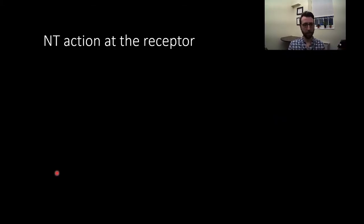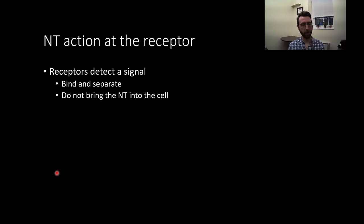We're talking about receptors mostly for neurotransmitters here. What receptors do is they basically detect the presence of a signal. Neurotransmitters bind to a receptor and then separate. It's worth noting, and this may sound obvious, that the receptors do not bring the neurotransmitter into the cell. I see this as a mistake people make a lot of the time. They think that the neurotransmitter shows up and then goes through the channel and does things inside the cell. It's not the case. It binds and separates.